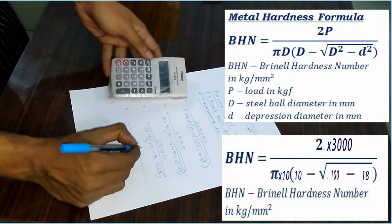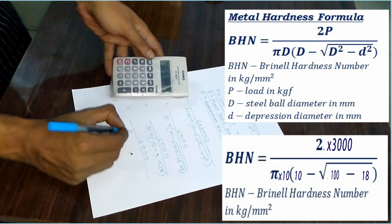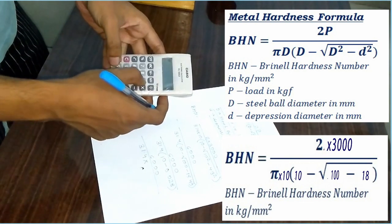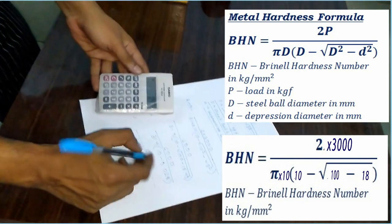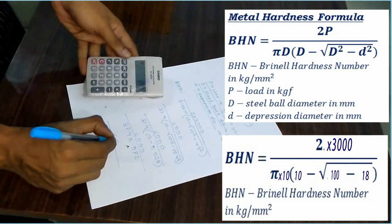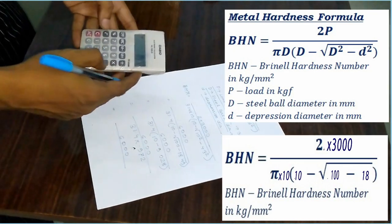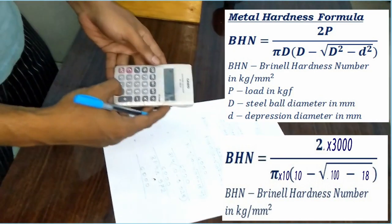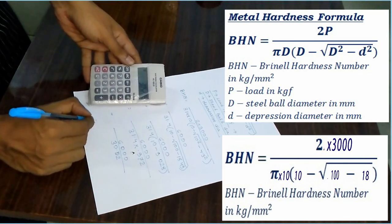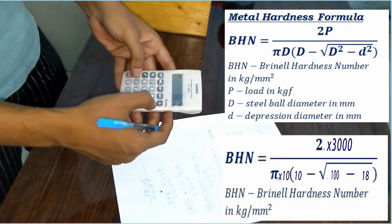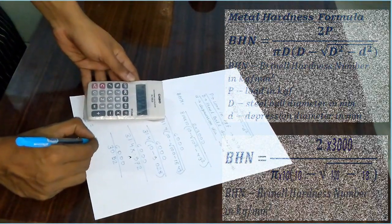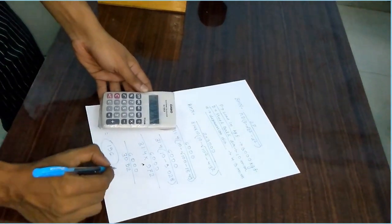So, now 6031.4 into 10 minus 9.028. It is 0.972. If we multiply with 31.4, then we are getting 30.52. 6000 divided by 30.52, it is 196. So, this is renal hardness number.